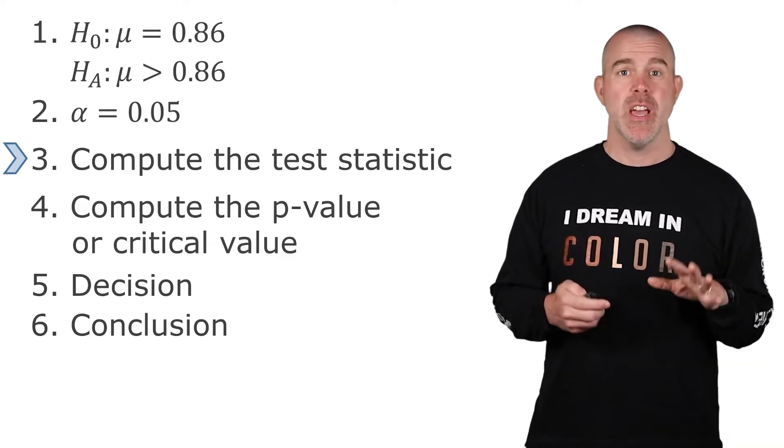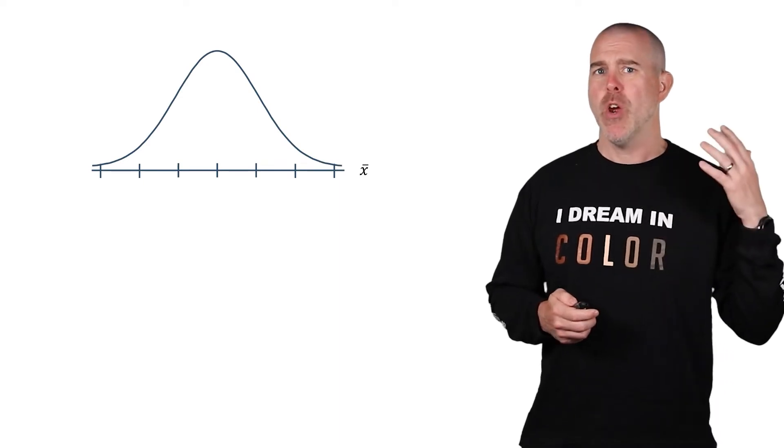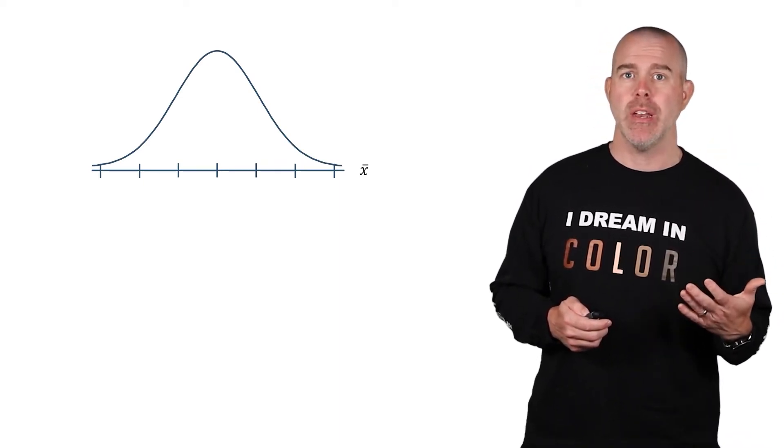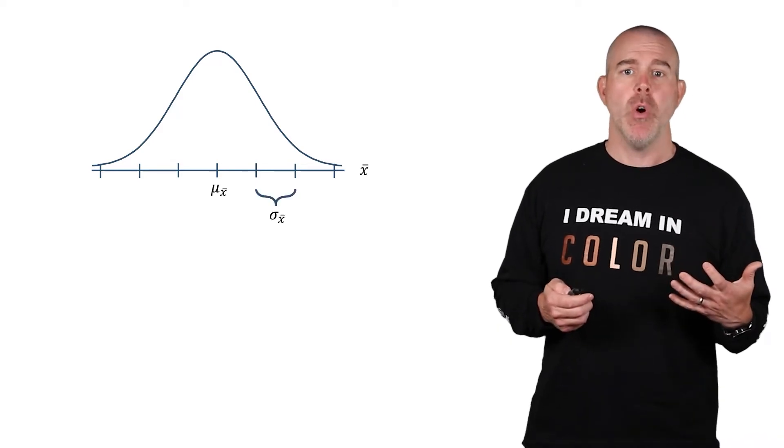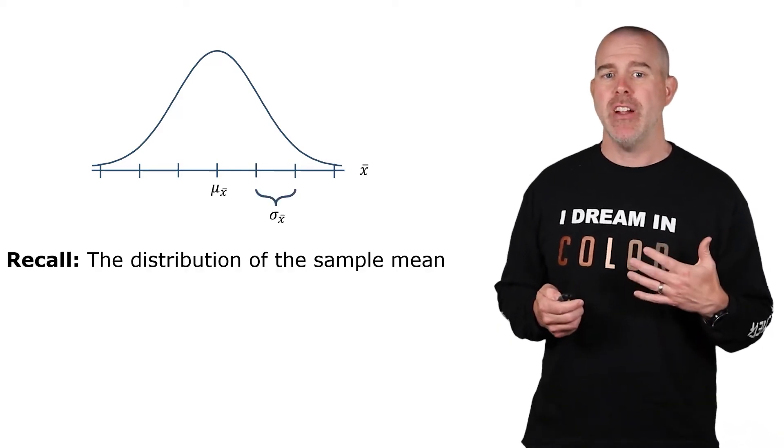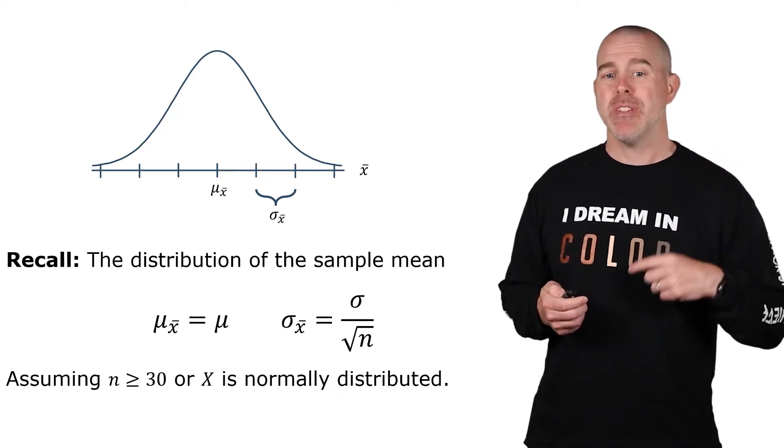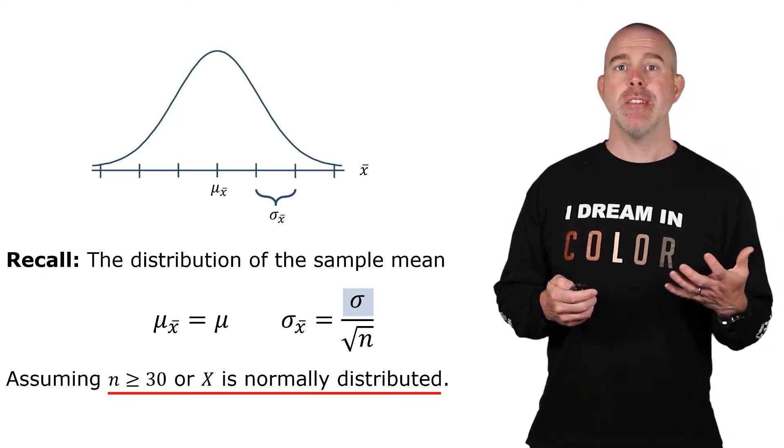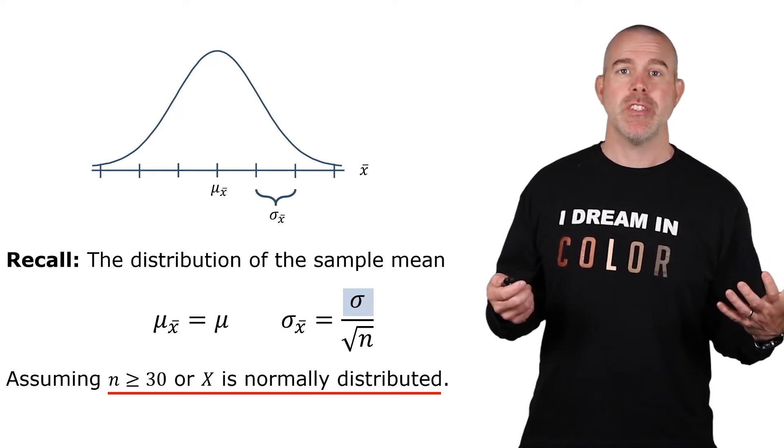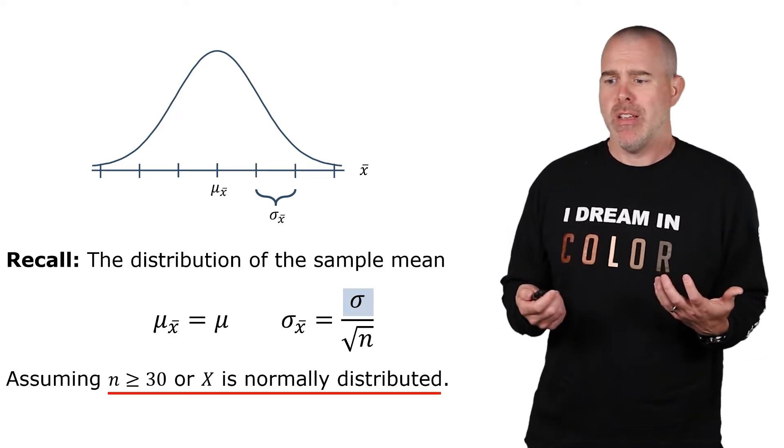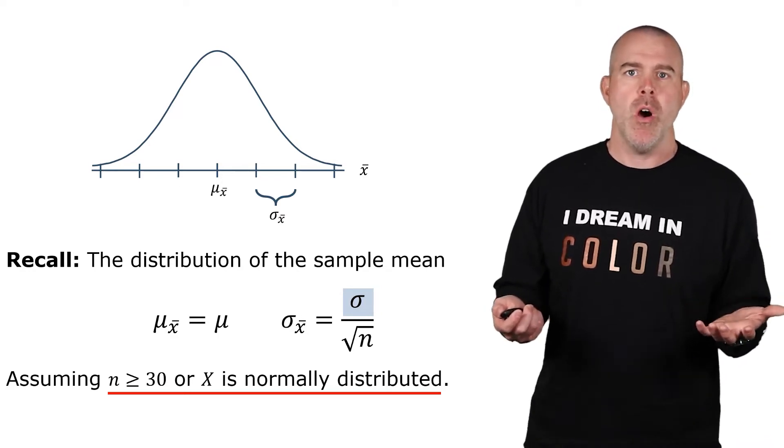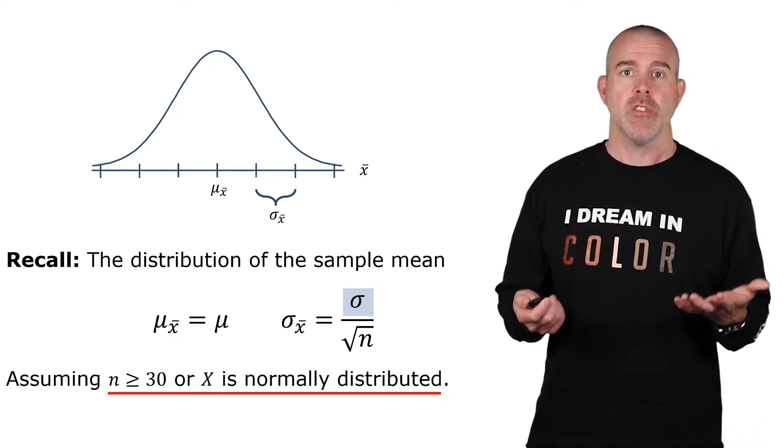For the test statistic, we're going to use technology. But let's talk about what it's doing. And to do that, we have to kind of refresh our mind about how the sample means are distributed. And we said they were approximately normal with this mean and standard deviation if the sample size was large or X was normally distributed. The problem is we don't usually know the population standard deviation. Like we have our summary about our data of the children of immigrants, but we don't know what the actual standard deviation is for the children of immigrants.